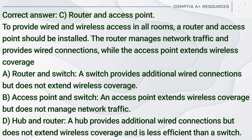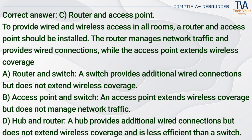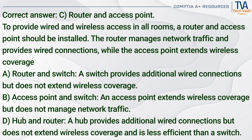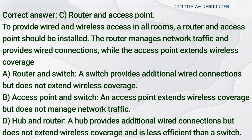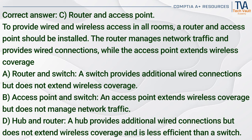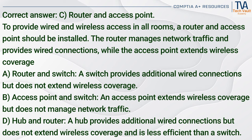Correct answer: C. Router and access point. To provide wired and wireless access in all rooms, a router and access point should be installed. The router manages network traffic and provides wired connections, while the access point extends wireless coverage. A router and switch (A) provides additional wired connections but does not extend wireless coverage. An access point and switch (B) extends wireless coverage but does not manage network traffic. A hub and router (D) provides additional wired connections but does not extend wireless coverage and is less efficient than a switch.